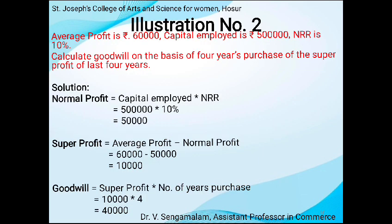Now we are going to see illustration 2. Average profit is Rs. 60,000. Capital employed is Rs. 5,00,000. NRR is 10%. Calculate goodwill on the basis of 4 years purchase of super profit. Solution: Normal Profit = Capital Employed × Normal Rate of Return = Rs. 50,000. Super Profit = Average Profit − Normal Profit = Rs. 10,000. Goodwill = Super Profit × Number of Years Purchase = Rs. 40,000.